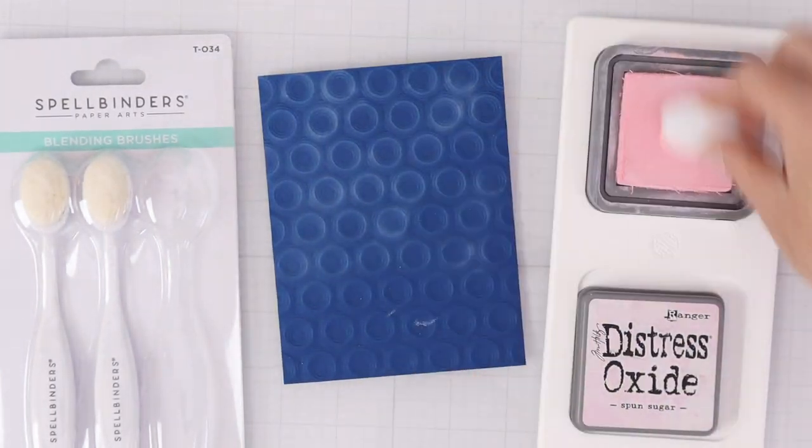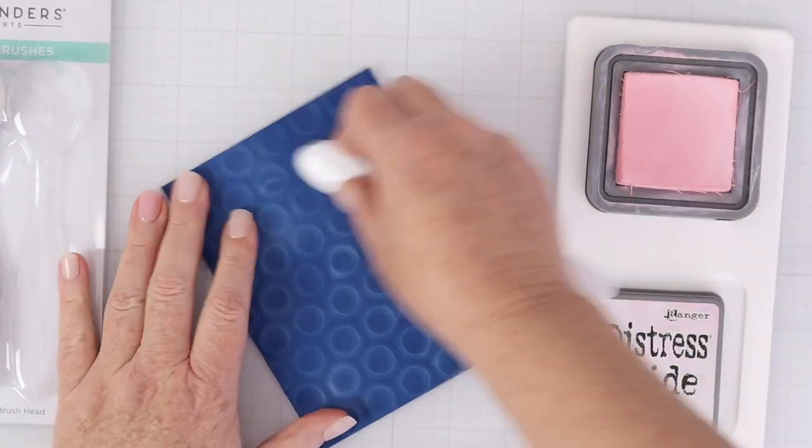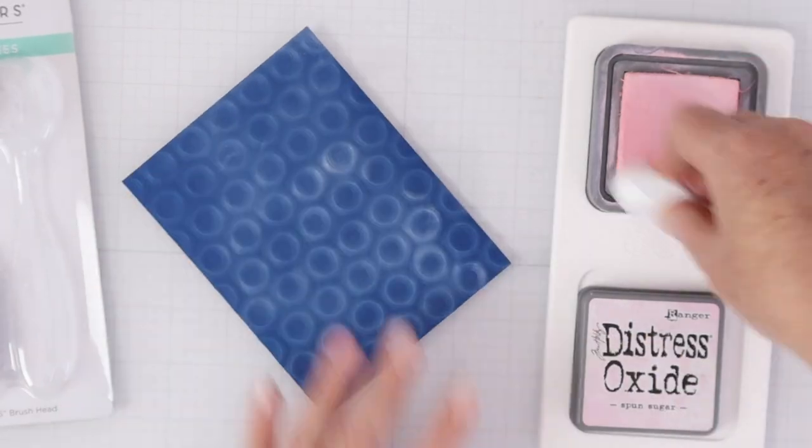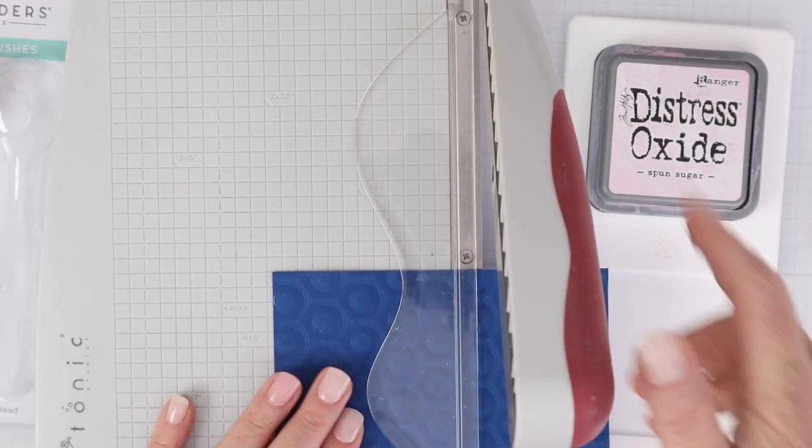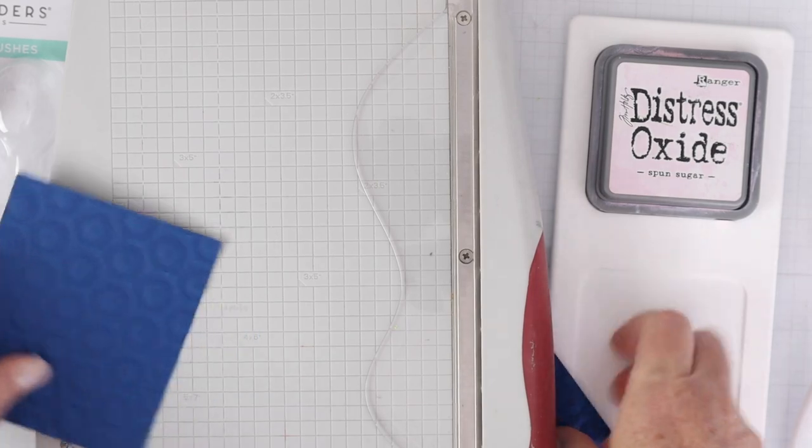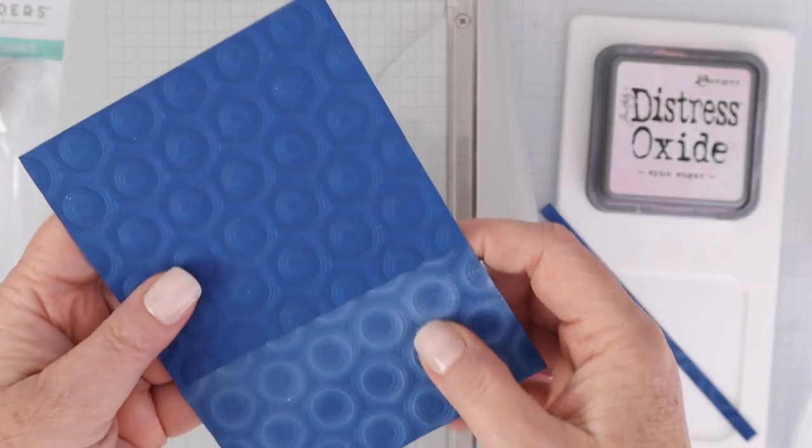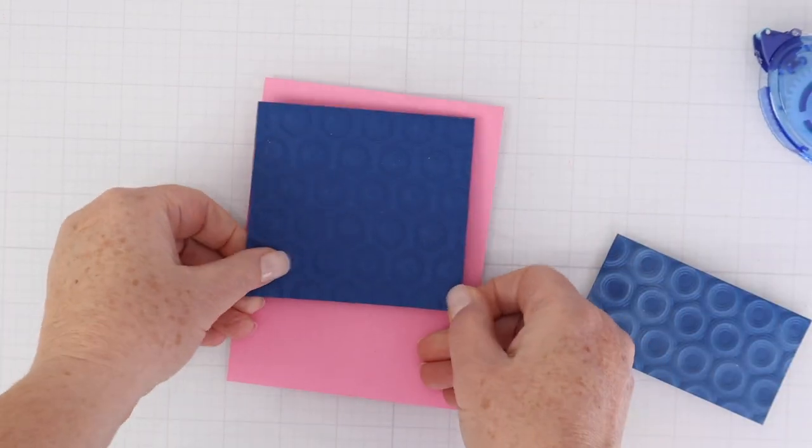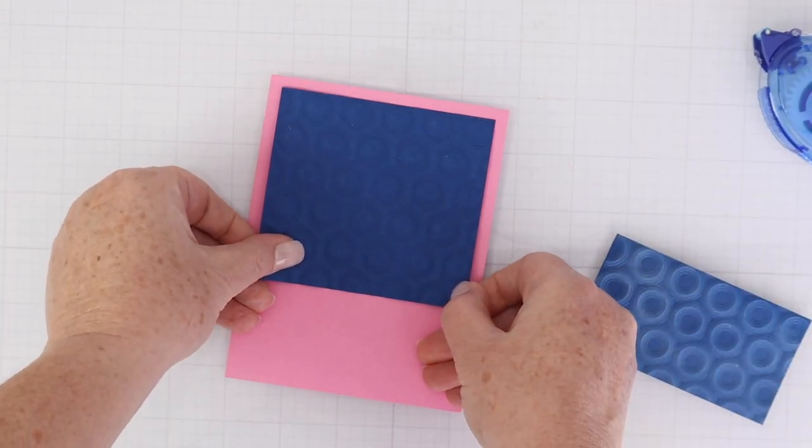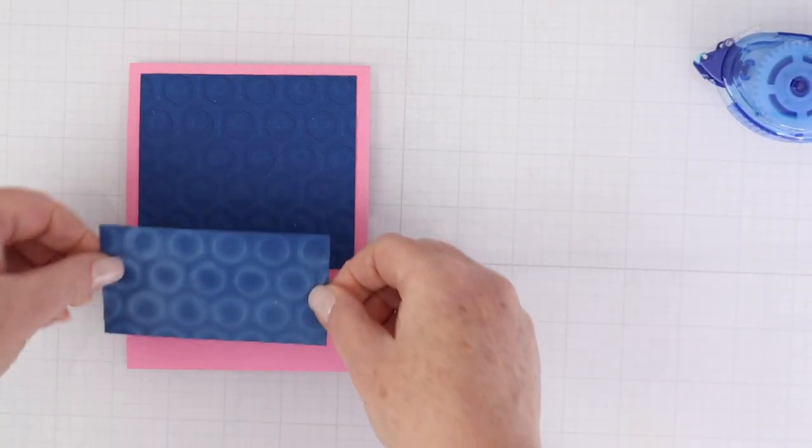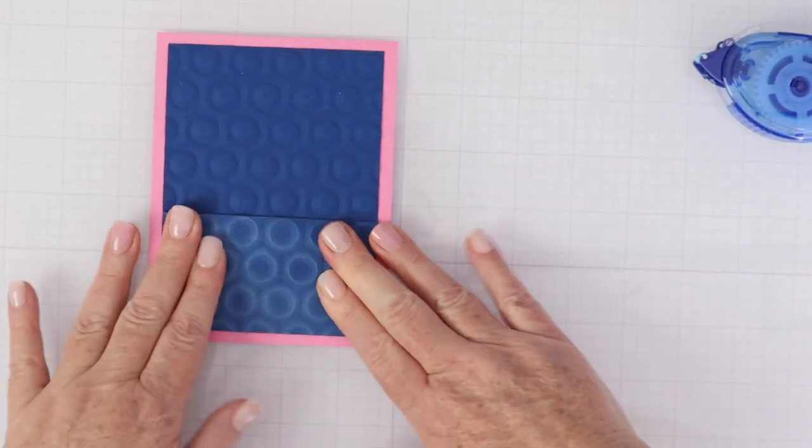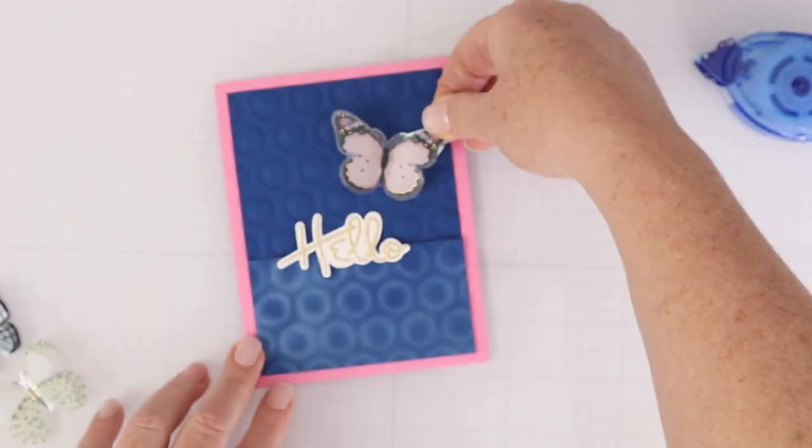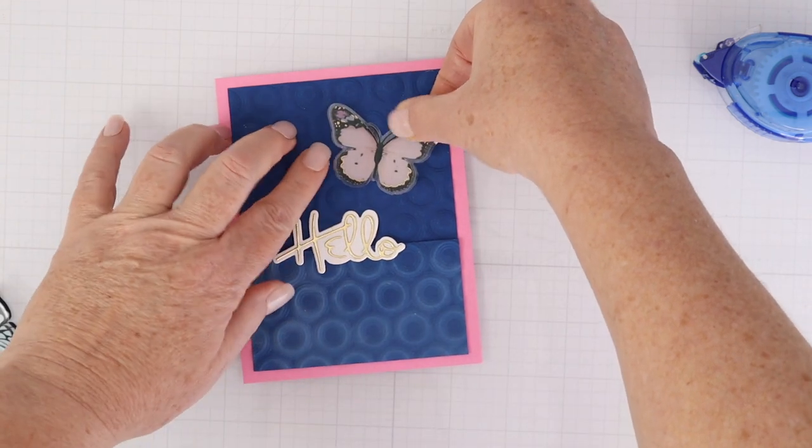So I am going to ink blend with some Spellbinders blending brushes and some distress oxide in spun sugar. And I'm holding the oxide in place with a waffle flower ink holder. I just shared those in a video recently and I find them to be very helpful so that you don't have to worry about holding the ink pad in place. I cut this background down so that one part of it is going to be the dark without the ink blending and then the bottom part is going to have the ink blending. And that was just because I loved the way both of them looked and I didn't want to favor one over the other.